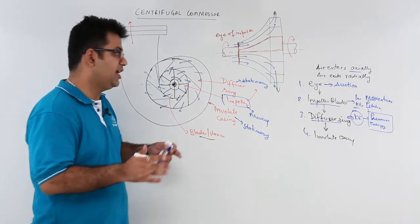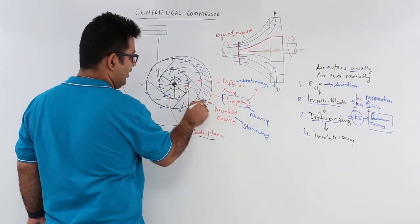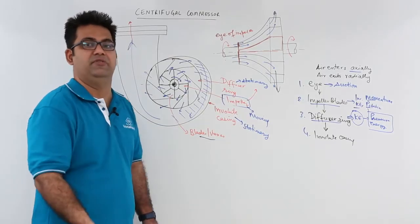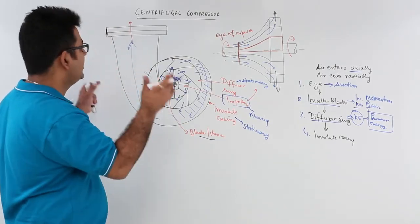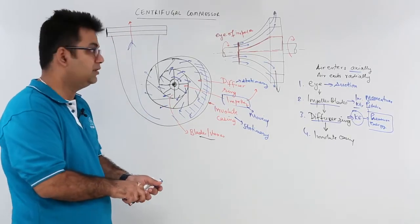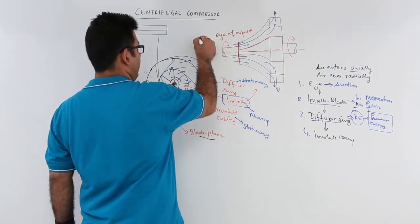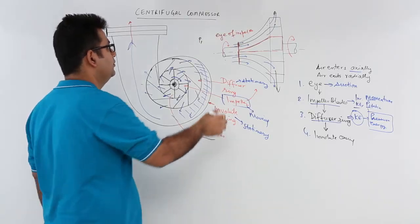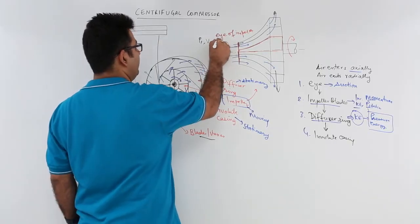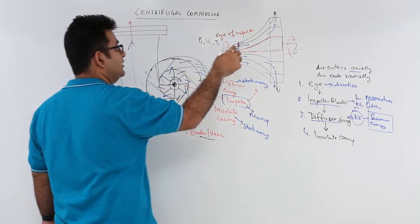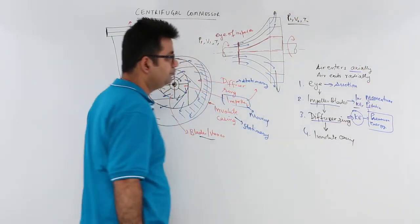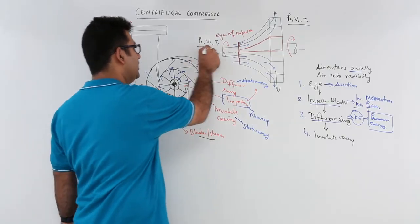Now this high pressure energy air is now taken into this involute casing. It gets collected over here, and it is pushed out of this involute casing into the receiver. So this is how a centrifugal compressor works. Let us say, at the inlet part, at the eye, you have pressure P1, which is almost equal to the atmospheric pressure. The velocity with which it comes in, it is V1, and the temperature is T1. At exit, let us say it is P2, V2, and T2. So this is the inlet condition, and this is the outlet condition.